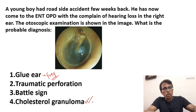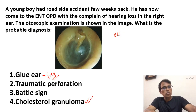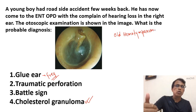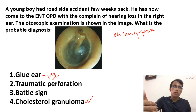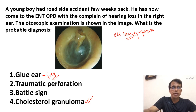Cholesterol granuloma is also called old hemotympanum. Hemo means blood, tympanum is the middle ear — there is blood collection in the middle ear from three to four weeks back because of trauma. The blood had collected, this has become old, and now it begins to look blue in color, making the tympanic membrane also appear blue — old hemotympanum.